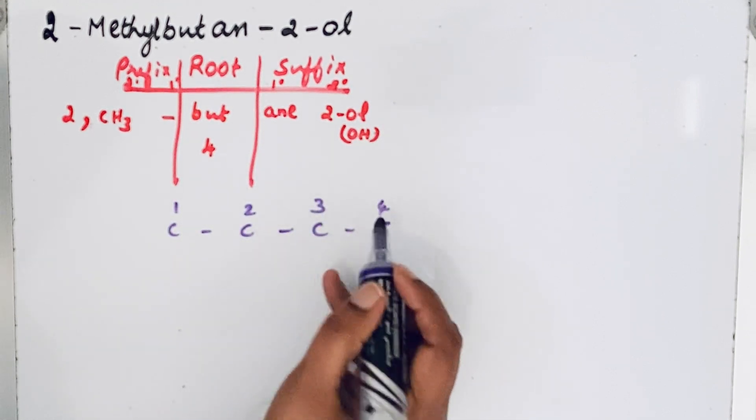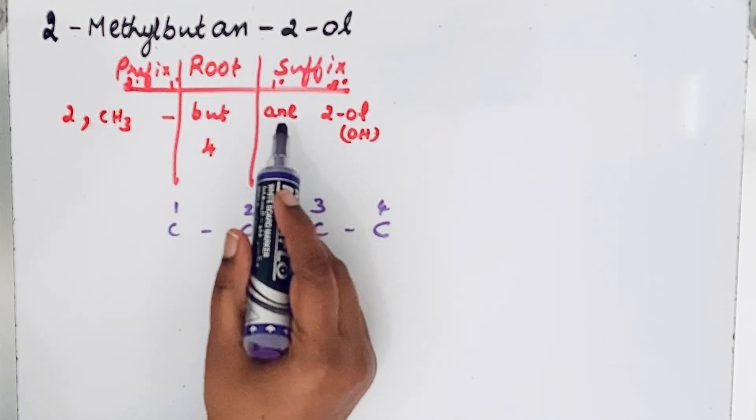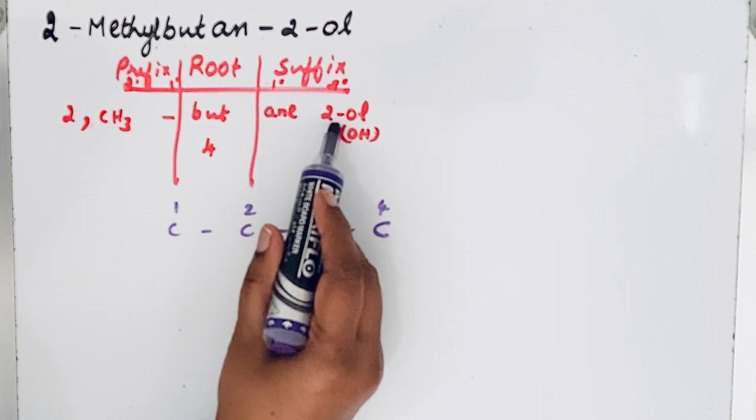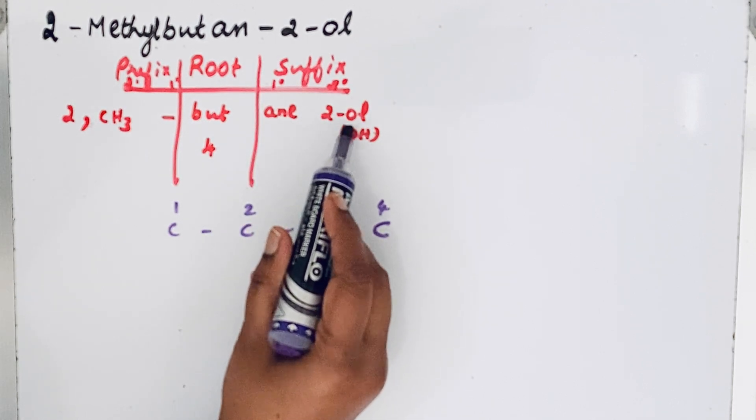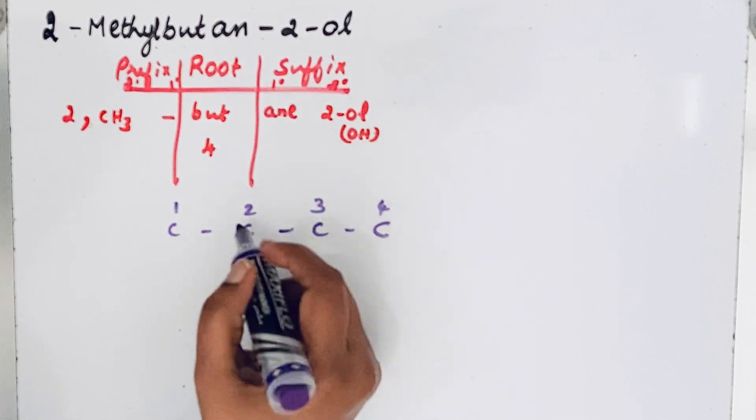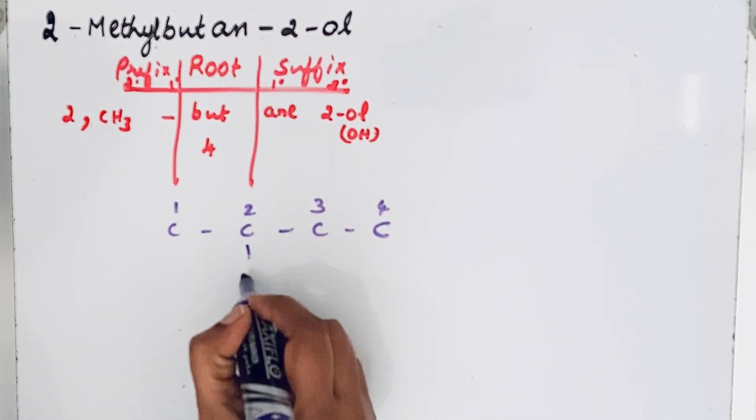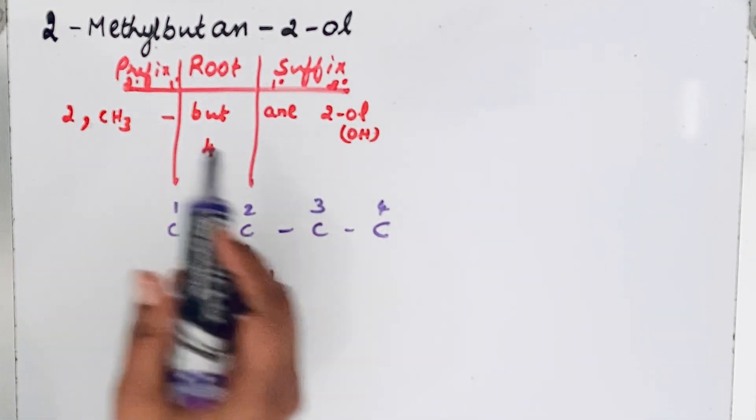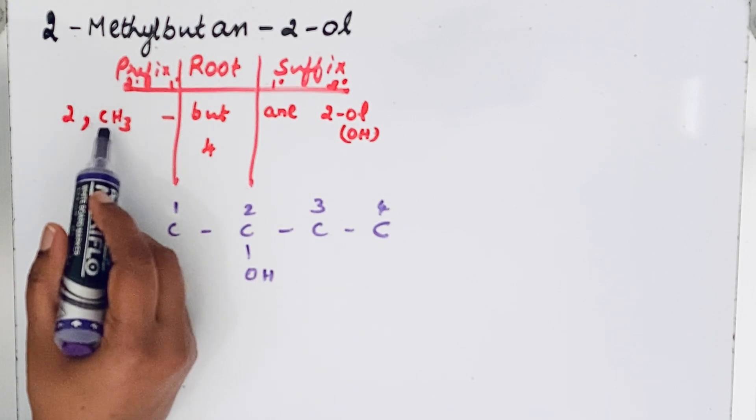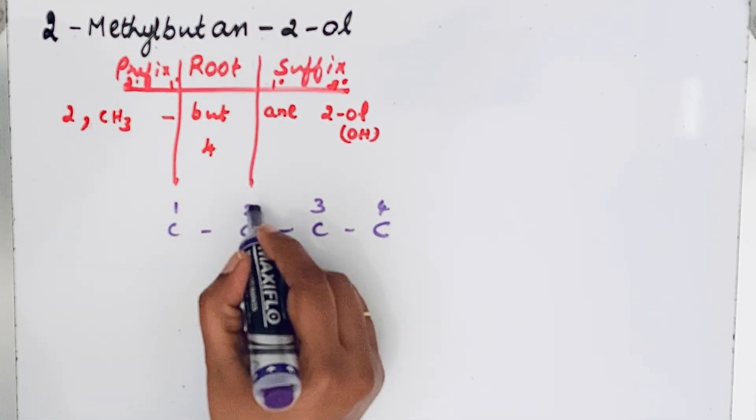Then in that second position, we have that ol. That means functional group is present, OH group. So OH group here. Then the prefix is 2-methyl, so in the second position we have that methyl group, CH3 group is present.